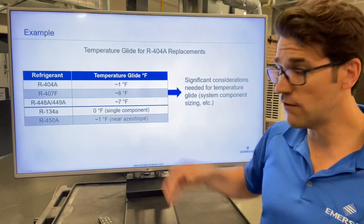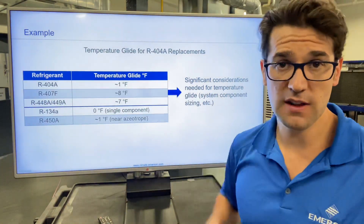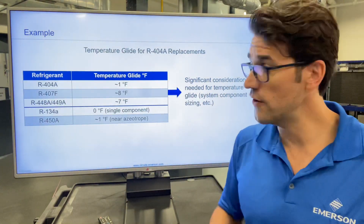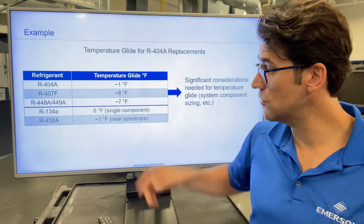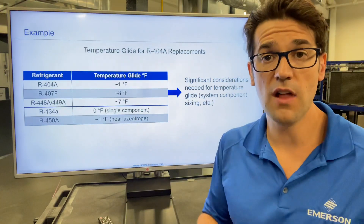As you can see, different refrigerants have different glide, and some of the newer refrigerants have up to eight degrees of glide.